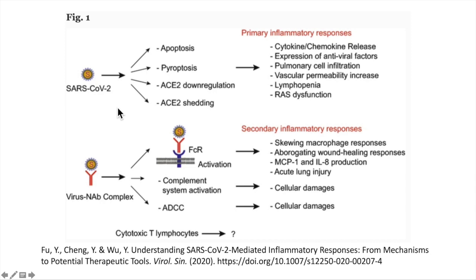As you can well imagine, the host cell doesn't take this viral invasion lying down. Primary inflammatory responses occur very early after viral infection, primarily initiated by the innate immune system. These responses are mainly driven by active viral replication, viral-mediated ACE2 downregulation and shedding, and also a host of antiviral responses, which can lead to increased cytokine and chemokine production, and cellular damage through apoptosis, which is also known as programmed cell death, and or pyroptosis, which is a cell death that results in elevated inflammation in the surrounding tissues.